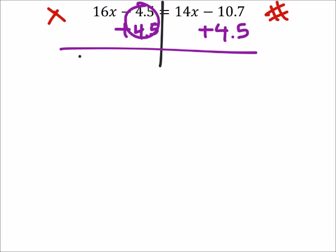So now I've got 16x equals 14x and negative 10.7 plus 4.5. I mean, you could use a calculator on this thing, but I think you should get a minus 6.2 on that.